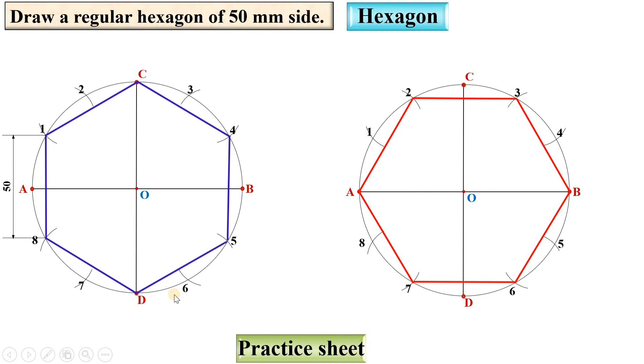You can follow unidirectional method also. At that time, you have to give all the dimensions in the unidirectional method. You can't mix both methods, aligned as well as unidirectional, in a single drawing.